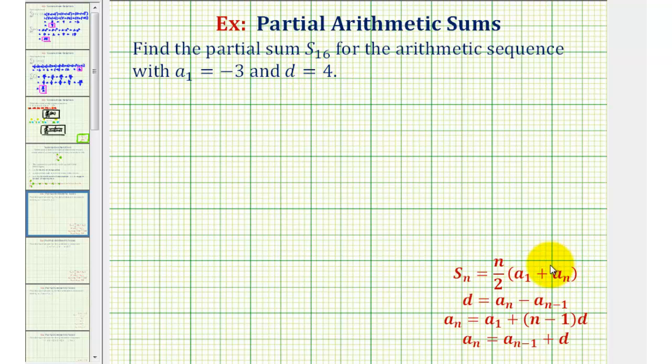The formula to find a partial sum for an arithmetic sequence is given here, where N is equal to the number of terms, A sub one is the first term, and A sub N would be the last term in the partial sum.